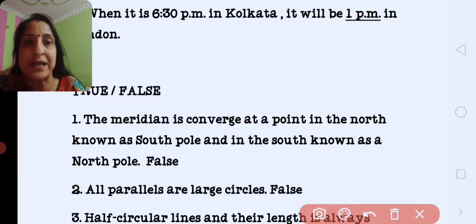Second, all parallels are large circles. It is wrong. Equator is a large circle. Other circles are lesser in size than the equator.